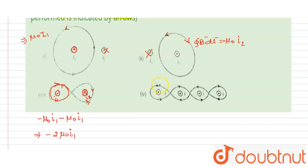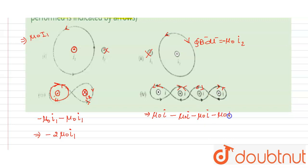For the fourth loop, the current direction is upward so the magnetic field should be in this direction, but the given direction is opposite, so it will be -μ₀i. Similarly, for the fifth loop, the magnetic field should be anti-clockwise but in the given question it is clockwise, so there is also a negative sign: -μ₀i. Therefore, the total ∮B·dl = -2μ₀i.